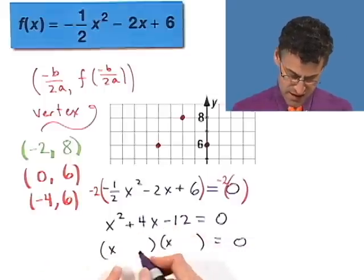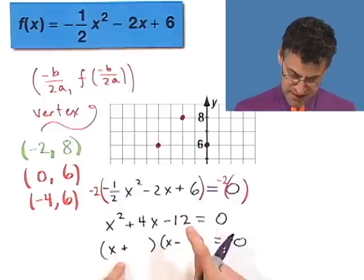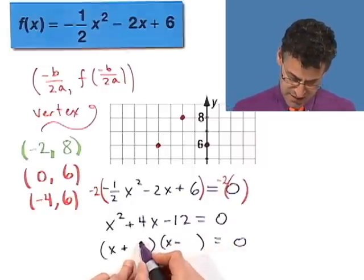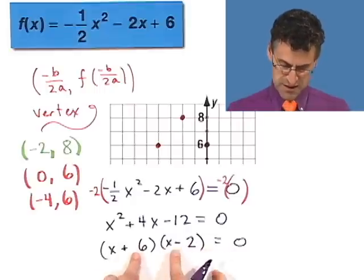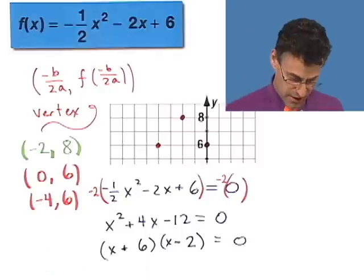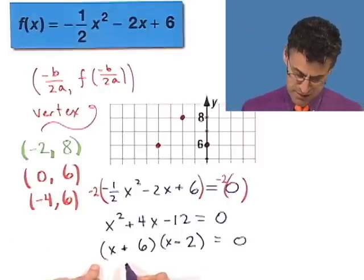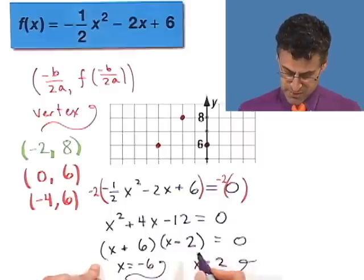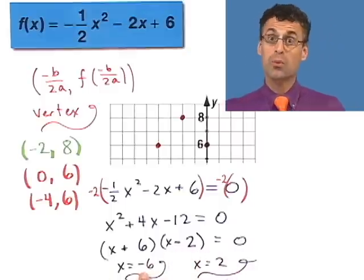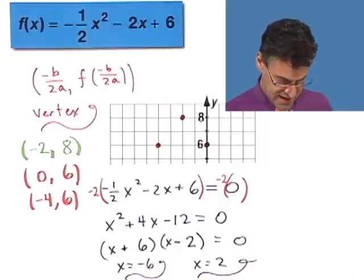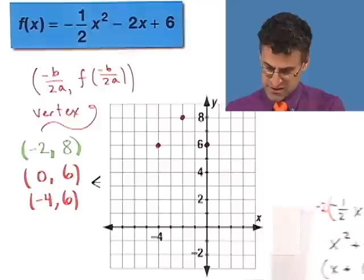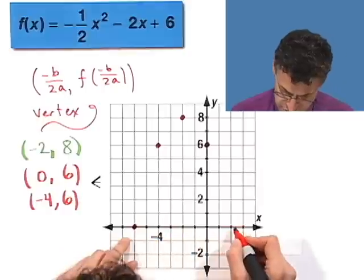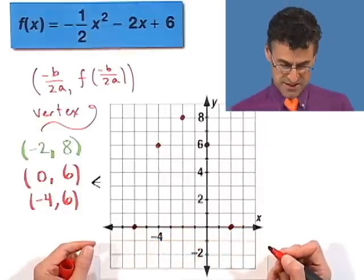Factoring x squared plus 4x minus 12: we need factors of x times x, with opposite signs, that multiply to give negative 12 and add to give 4. That's 6 and 2: x plus 6 times x minus 2. So either x plus 6 equals 0, meaning x equals negative 6, or x minus 2 equals 0, meaning x equals 2. The parabola crosses the x-axis at negative 6 and 2.